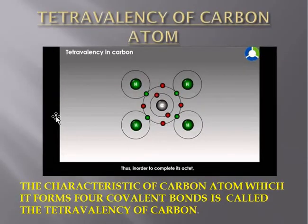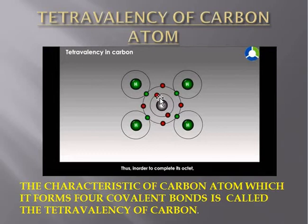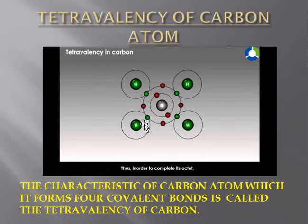Carbon has a valency of four. I'm going to show you the structure here. The total number of electrons present in carbon is six — two in the inner shell and four electrons in its outermost orbit. The red dots are the electrons of carbon. The green colors represent electrons of hydrogen. Hydrogen is not stable, so it forms a covalent bond by sharing its electron with the outermost electron of carbon. The characteristic of a carbon atom in which it forms four covalent bonds is called the tetravalency of carbon.